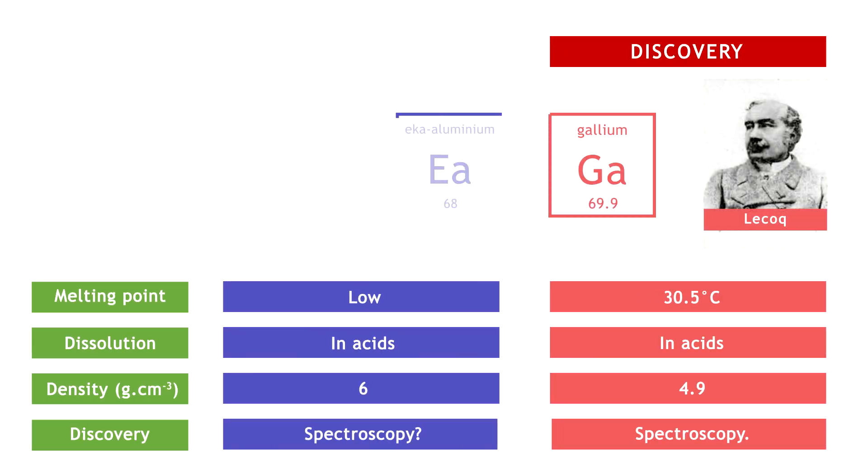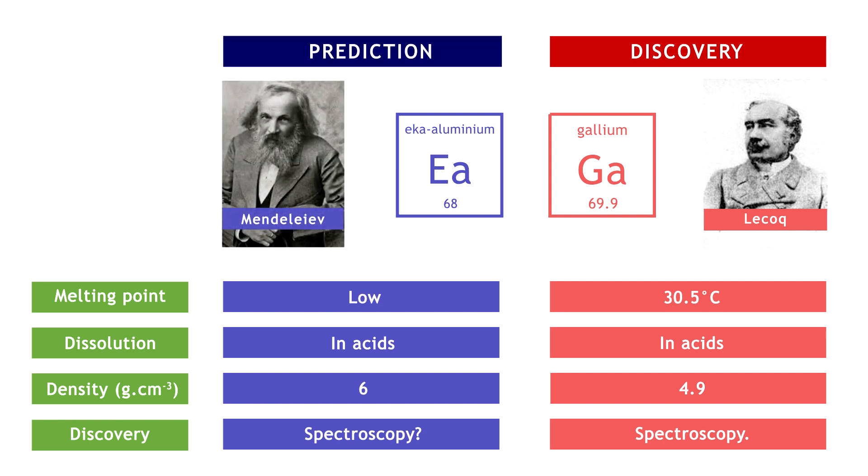According to him, this new element had almost the same properties as eka-aluminium, an element whose existence had been predicted a few years before by Dmitry Mendeleev, father of the periodic table.